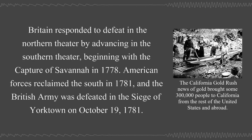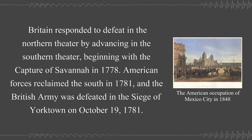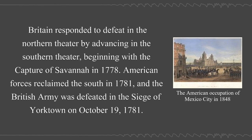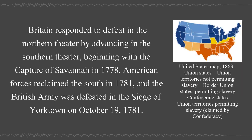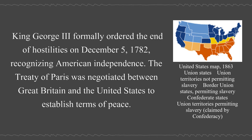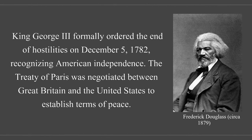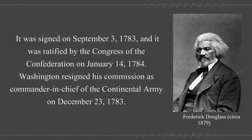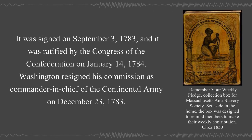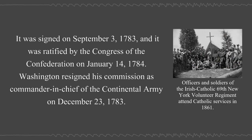Britain responded to defeat in the Northern Theater by advancing in the Southern Theater, beginning with the capture of Savannah in 1778. American forces reclaimed the South in 1781, and the British Army was defeated in the siege of Yorktown on October 19, 1781. King George III formally ordered the end of hostilities on December 5, 1782, recognizing American independence. The Treaty of Paris was negotiated between Great Britain and the United States to establish terms of peace. It was signed on September 3, 1783, and ratified by the Congress of the Confederation on January 14, 1784. Washington resigned his commission as Commander-in-Chief of the Continental Army on December 23, 1783.